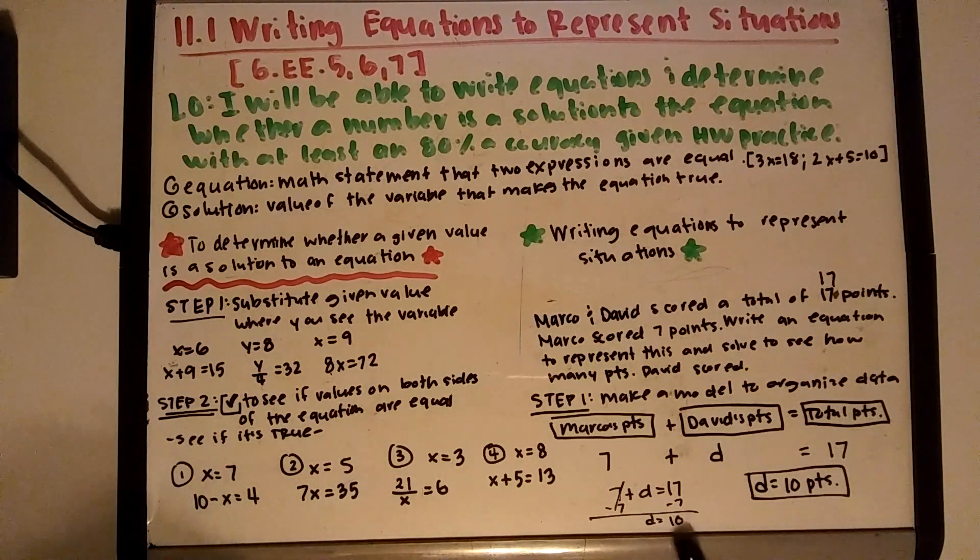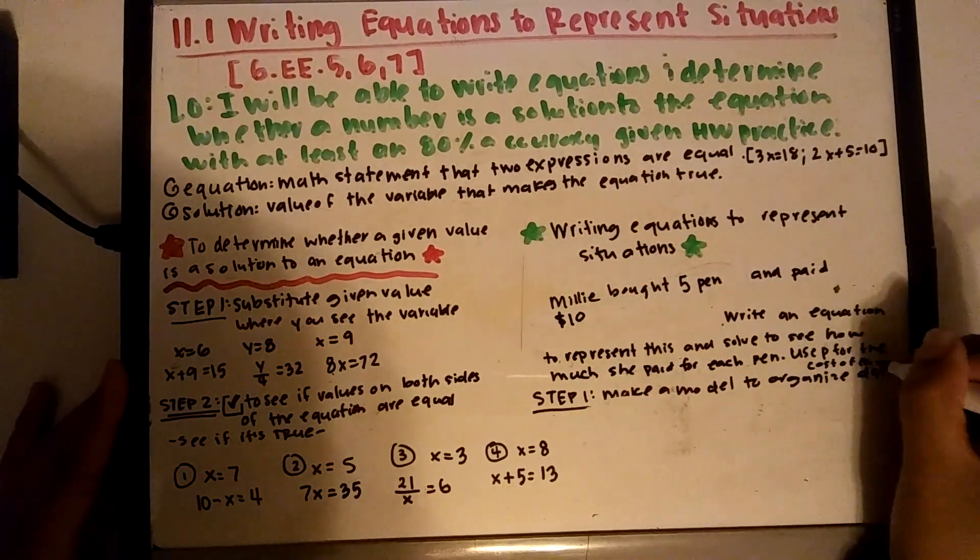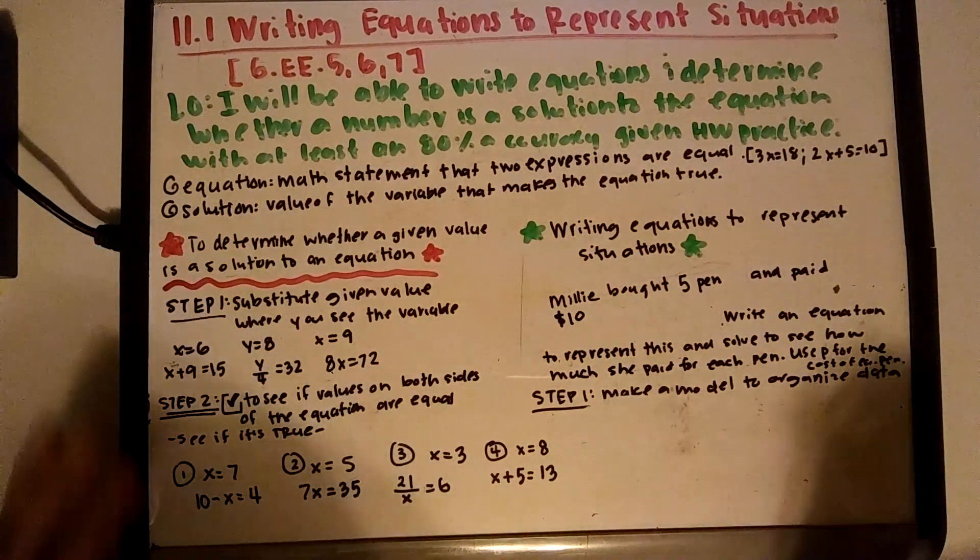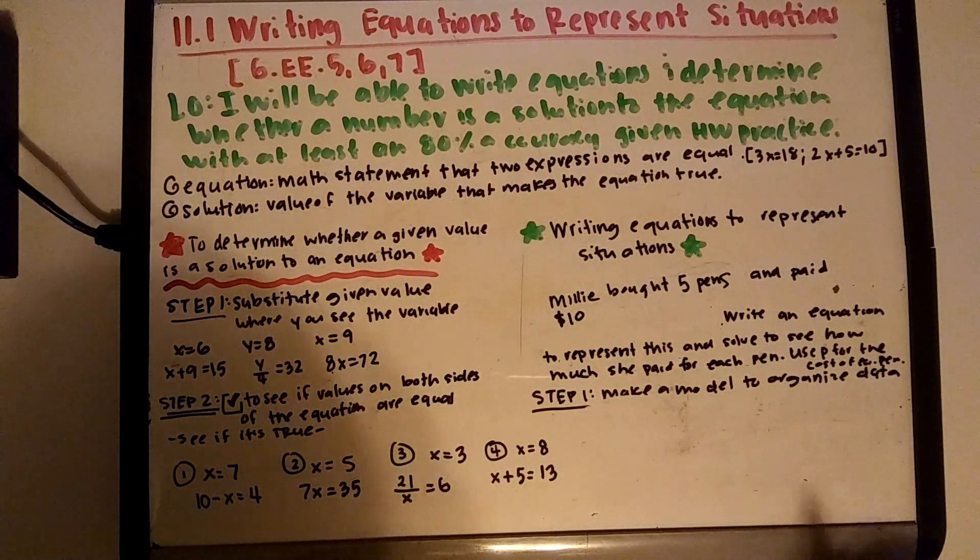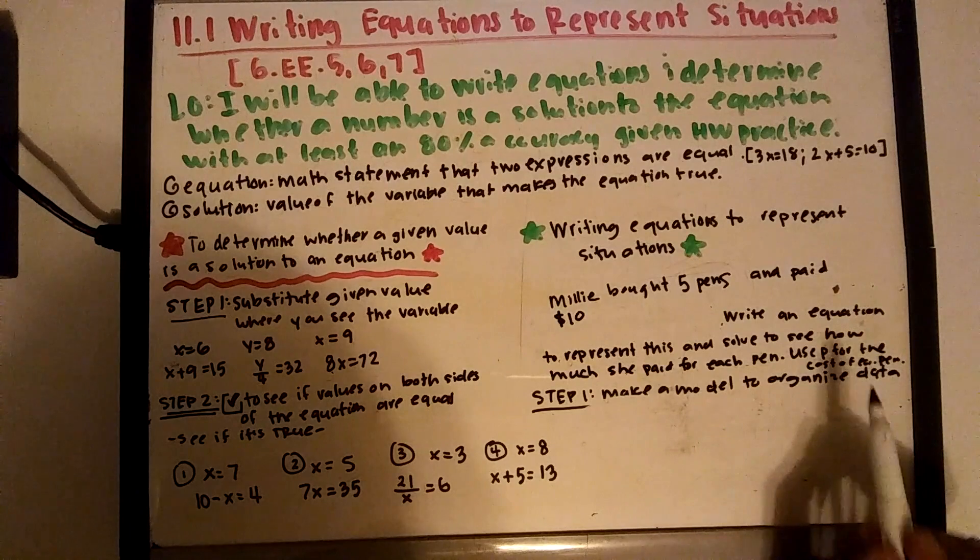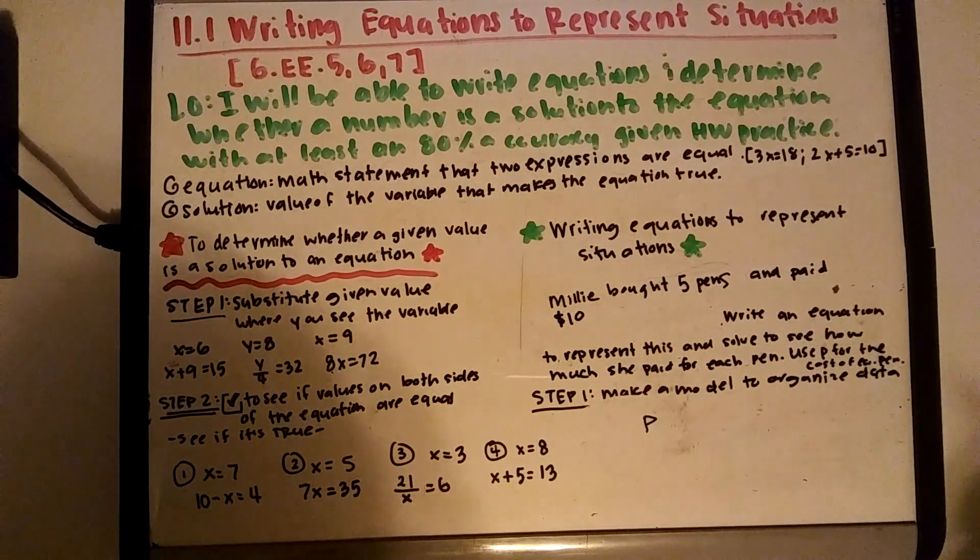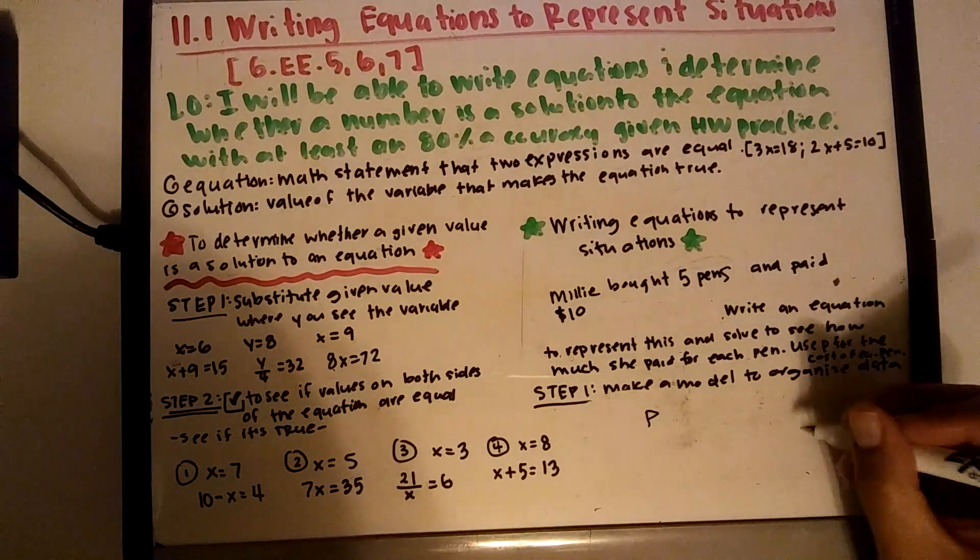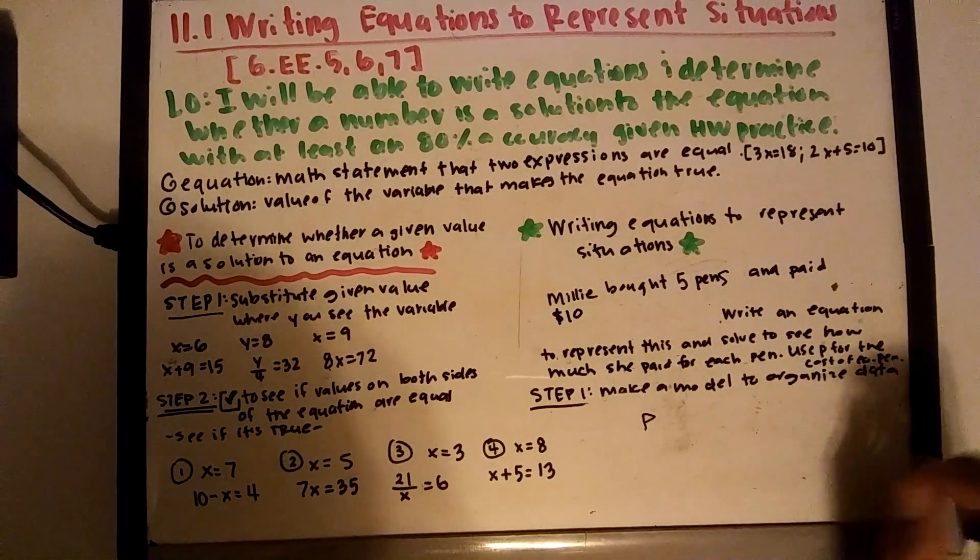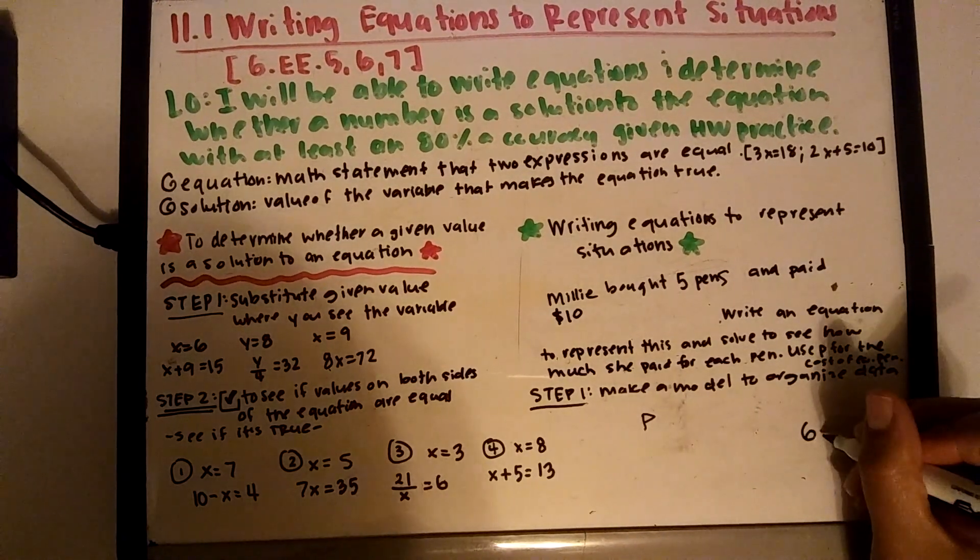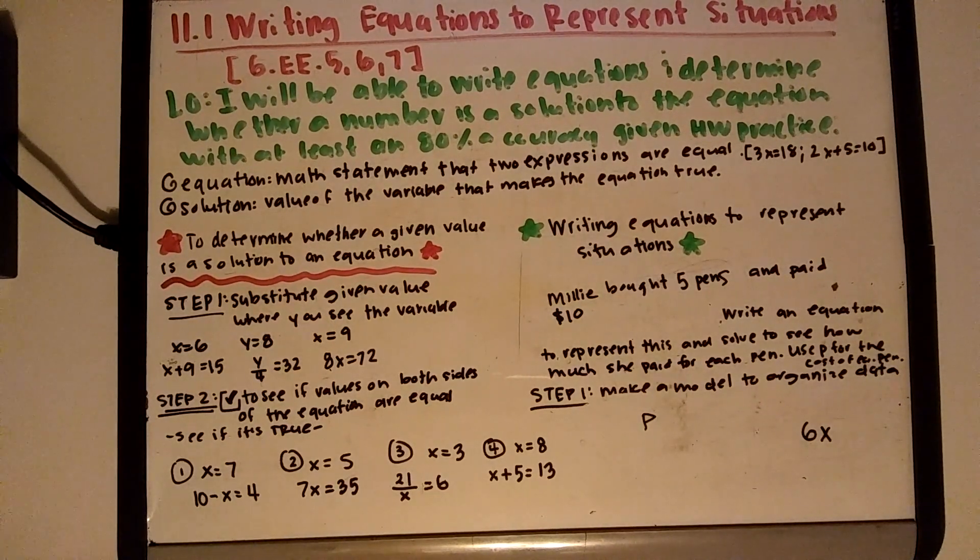Okay, let me give you one to do for this one. Millie bought five pens and she paid ten dollars. Write an equation - I know you guys can do this right away in your mind, but let's write an equation to represent this and solve to see how much you pay for each of those pens, and use P for pens. Remember when we multiply, we don't do this anymore because that might look like a variable. So when we multiply 6 times x, we do 6x. All right, God bless you. You're amazing. Don't give up. Bye!